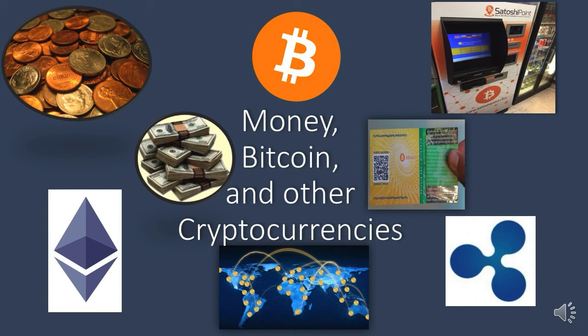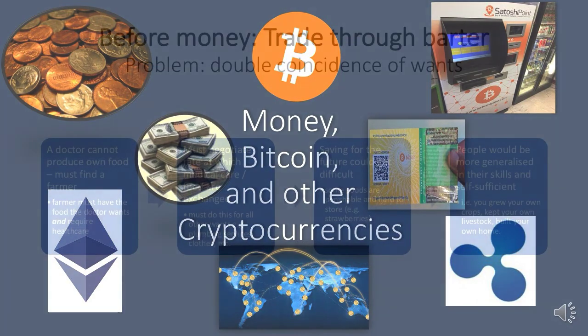Then I will talk about why Bitcoin was invented, how it works, how it tries to address some of those problems with money, and a brief history of Bitcoin to date. And then finally, I will talk about how you can go about obtaining Bitcoin for yourself, and a short description of some of the other cryptocurrencies now available.